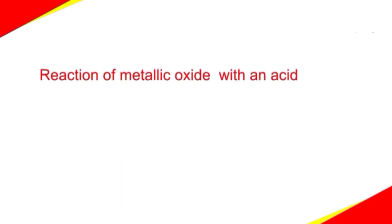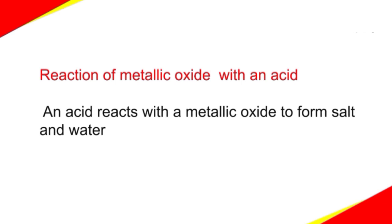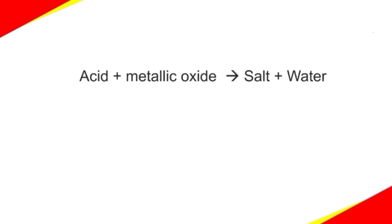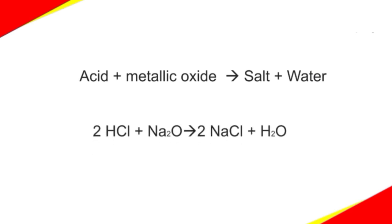The next property is reaction of metallic oxide with an acid. Metallic oxide is basic in nature. Hence, when an acid reacts with a metallic oxide, it forms salt and water. Acid plus metallic oxide gives salt plus water. HCl, which is an acid, when reacted with sodium oxide Na₂O, gives sodium chloride (a salt) and water.